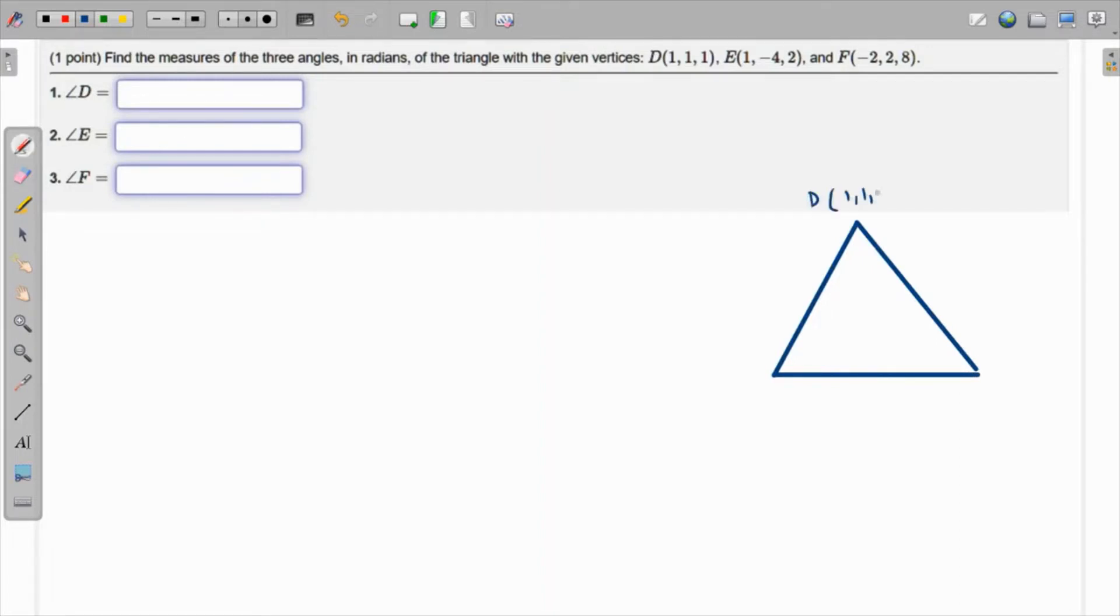They are in 3D by the way. D is at (1,1,1), E is (1,-4,2), and F is (-2,2,8). I'm going to use vectors to find the angles.